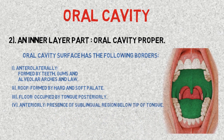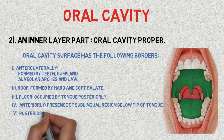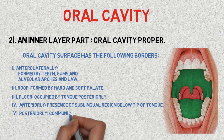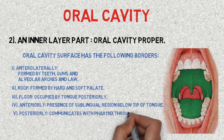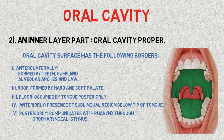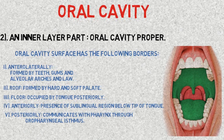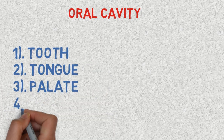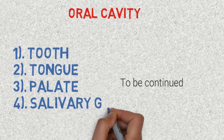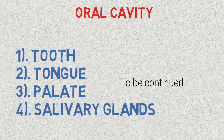The fifth part is the posterior surface, which communicates with the pharynx through the oropharyngeal isthmus. In the next video, we will talk about the types of the oral cavity in detail — there are four types: tooth, tongue, palate, and salivary gland. So stay tuned.